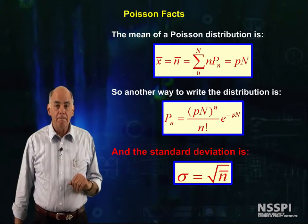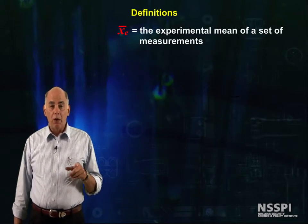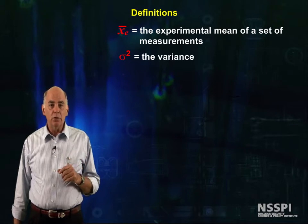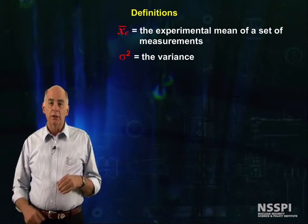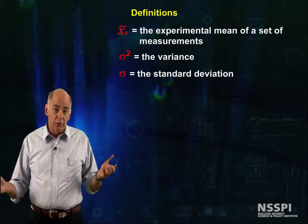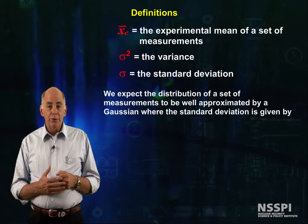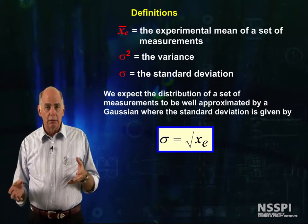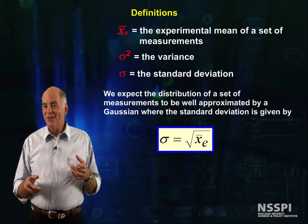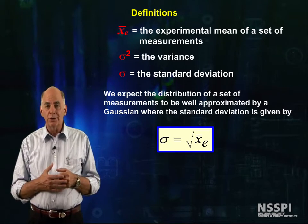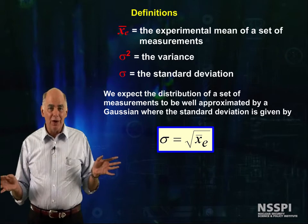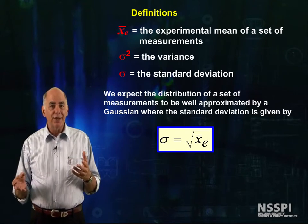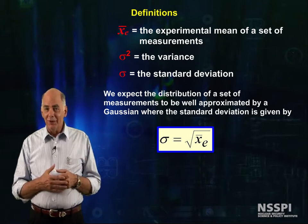Let's regroup and look at some definitions. Let's define x-bar sub e as the experimental mean of a set of measurements. Sigma squared is the symbol statisticians use for the variance — the square of the standard deviation. We expect the distribution for a set of measurements to be well approximated by a Gaussian. Why Gaussian and not a Poisson? On the surface this makes no sense: Poissons are for discrete values, integer counts like the number of times you flip heads, whereas Gaussians are set up for real numbers.